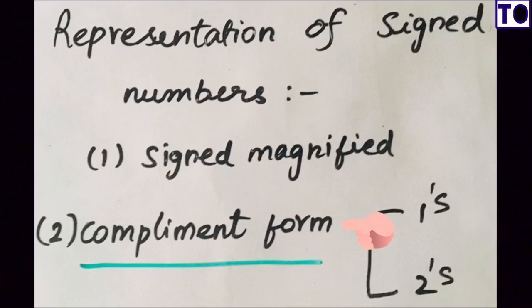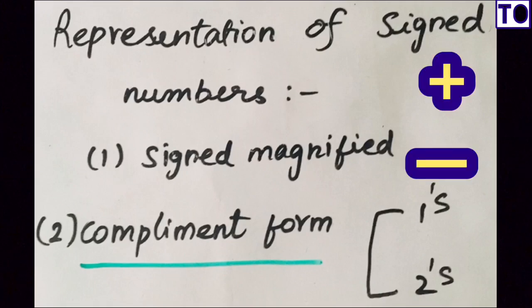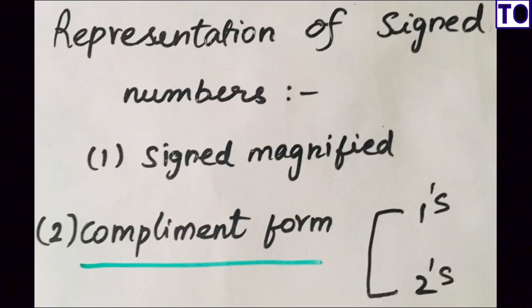Let's talk about Signed Magnitude Form. Signed Magnitude Form is sign magnitude. If you look at Signed Magnitude, it represents a sign. Sign means plus or minus — that means it is plus or minus.